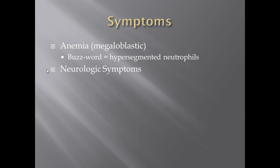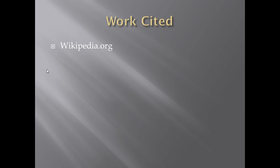If both homocysteine and methylmalonyl-CoA are elevated and B12 is decreased, you're thinking B12 deficiency. A key buzzword for B12 deficiency — at any level from high school to medical school — is hypersegmented neutrophils. Normally neutrophils have three to five nuclear segments; if you start seeing six, seven, eight, or nine segments, think B12 deficiency. This is associated with a megaloblastic anemia. B12 deficiency can also cause neurologic symptoms.